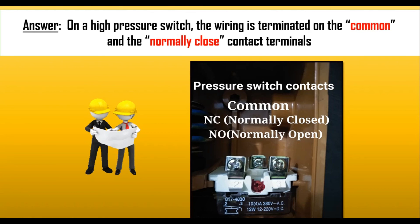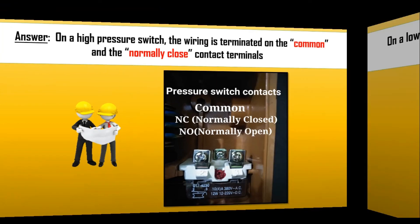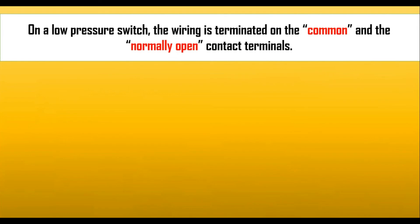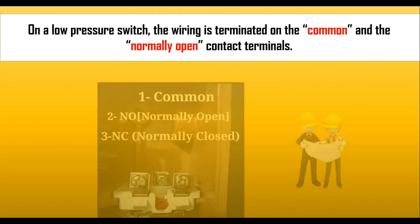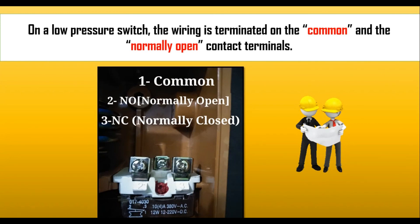Now let's see how to recognize the common, NO, and NC terminals. On a low pressure switch, the wiring is terminated on the common and normally open (NO) contact terminals. Terminal 3 in the picture is NC (normally closed) and is shown as closed. Terminal 2 is the NO (normally open) terminal, shown in open condition. Terminal 1 is the common terminal.